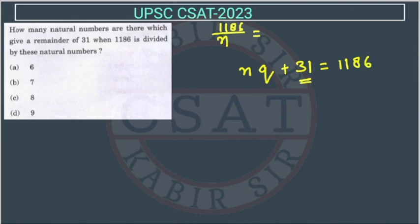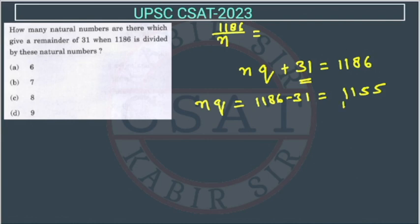So nq equals 1186 minus 31, which gives us 1155. Now we have to find n.